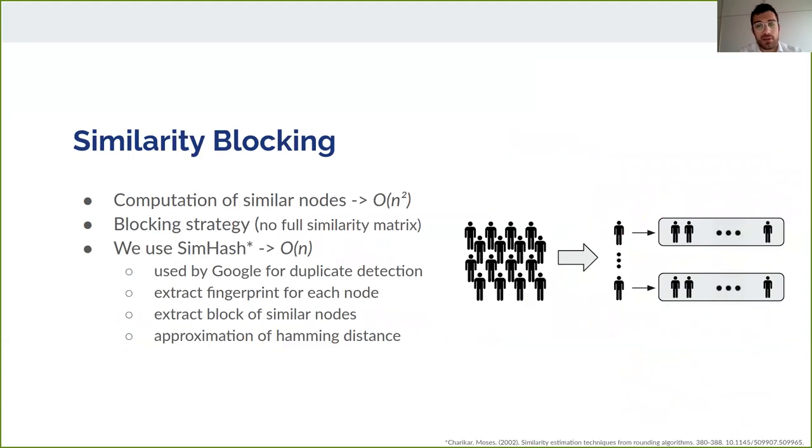At this point, we proceeded with the similarity blocking phase. In a naive way, we should compute the similarity matrix and take the most similar couple of nodes. However, the cost of this operation grows quadratically with the number of nodes, making it inefficient in a large network.